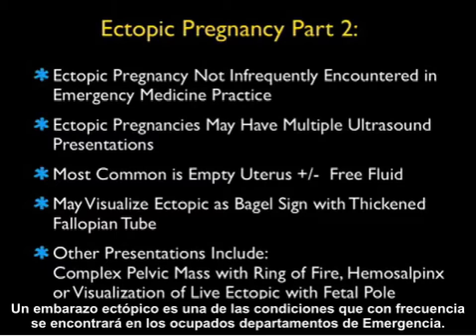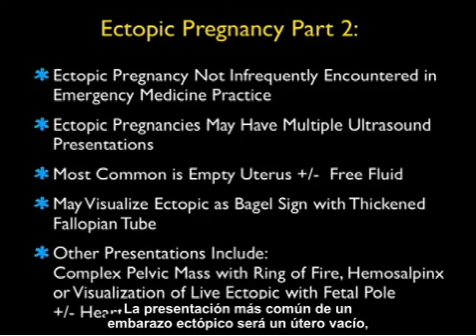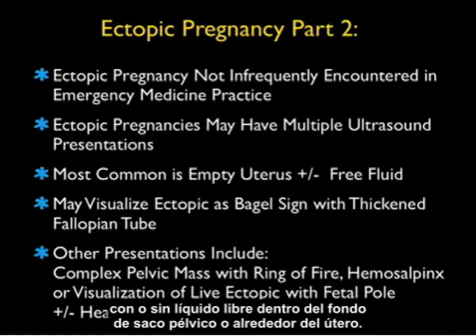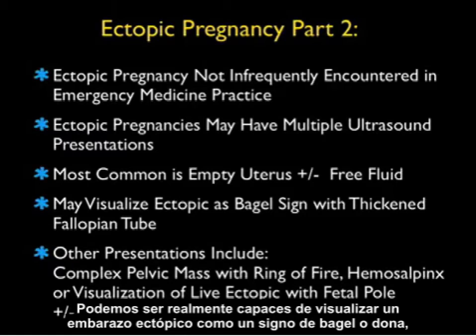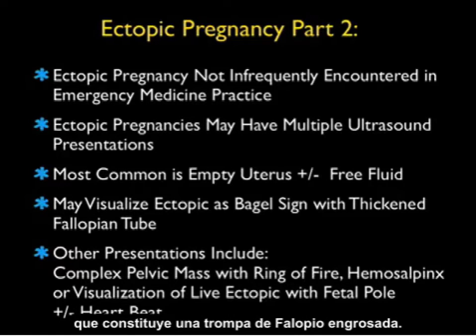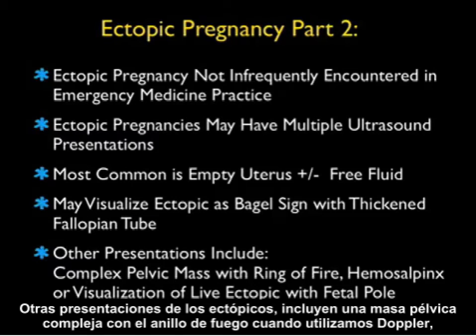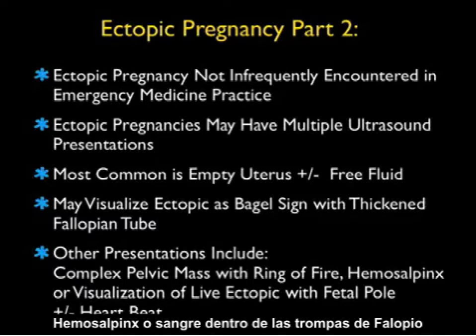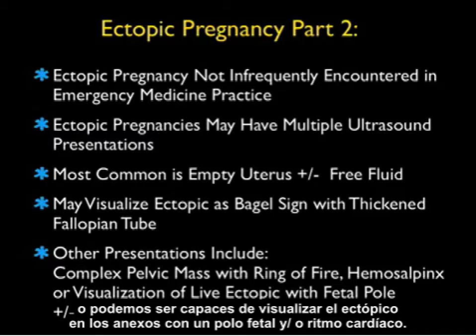Ectopic pregnancy is one of those conditions we'll not infrequently encounter in a busy EM practice. The most common presentation will be an empty uterus with or without free fluid within the pelvic cul-de-sac or surrounding the uterus. We may also be able to visualize the ectopic as a bagel sign, which constitutes a thickened fallopian tube. Other presentations include a complex pelvic mass with a ring of fire on Doppler sonography, hemosalpinx or blood within the fallopian tube, or a live ectopic in the adnexa with a fetal pole and/or heartbeat.